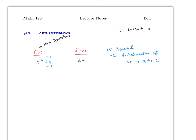We'll worry about determining the constant in a few minutes. For now, let's check that you understand what an anti-derivative is. The derivative of tan(x) is sec²(x), so the anti-derivative of sec²(x) is tan(x) + C. Similarly, the derivative of √x is 1/(2√x), so the anti-derivative of 1/(2√x) is √x plus a constant.